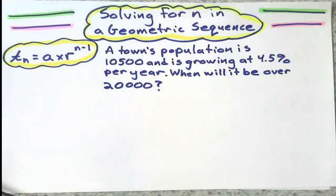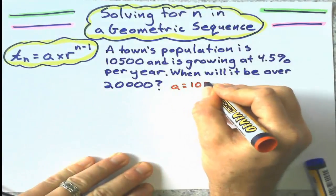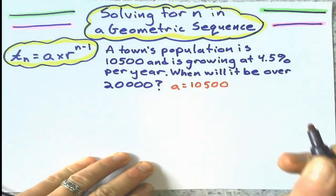So let's start with what we know. We know the first term. We know the first term is going to be 10,500.